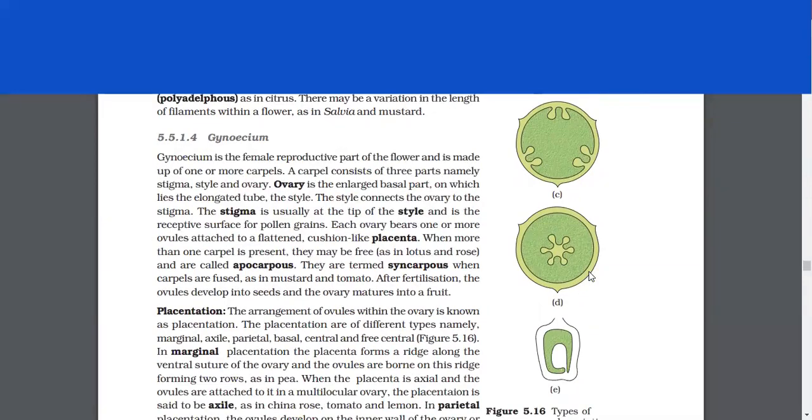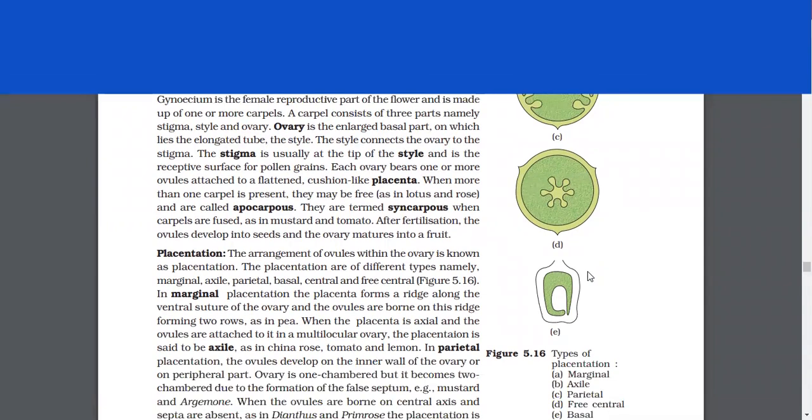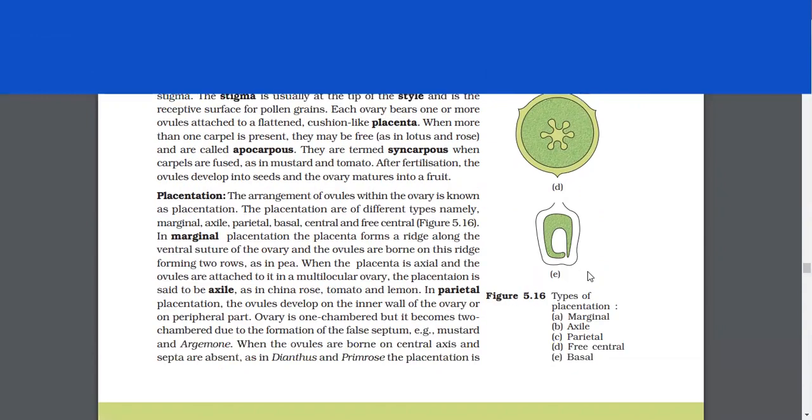Gynoecium. Gynoecium is the female reproductive part of the flower and is made up of one or more carpels. A carpel consists of three parts, namely stigma, style, and ovary. Ovary is the enlarged basal part on which lies the elongated tube, the style. The style connects the ovary to the stigma. The stigma is usually at the tip of the style and is the receptive surface for pollen grains. Each ovary bears one or more ovules attached to a flattened cushion like placenta. When more than one carpel is present, they may be free and are called apocarpous, and they are termed syncarpous when carpels are fused as in mustard and tomato. After fertilization, the ovules develop into seeds and the ovary matures into a fruit.